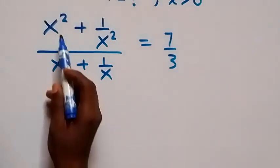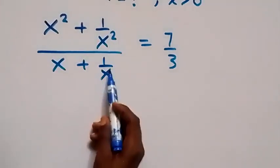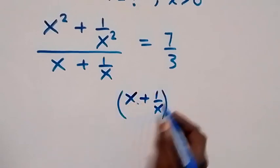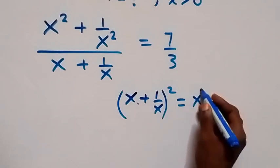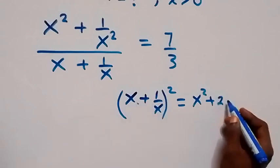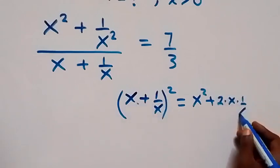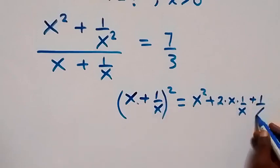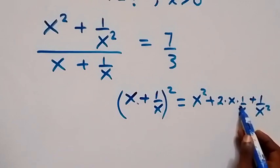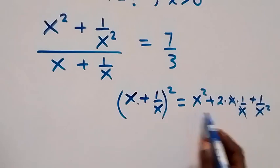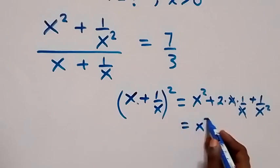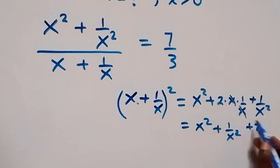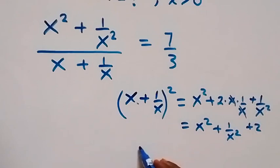We can equally write x squared plus 1 over x squared in terms of x plus 1 over x. When we expand x plus 1 over x, all squared, the expansion gives us x squared plus 2 times x times 1 over x, plus 1 over x squared. This x cancels with the x, so we are left with x squared plus 2 plus 1 over x squared.